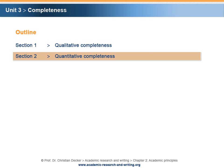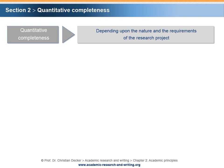Section 2: Quantitative completeness. Quantitative completeness depends upon the nature and the requirements of the research project. In academic research projects, there are a number of elements to be considered in terms of quantitative completeness. The following elements might be named differently in different research situations. Still, there always have to be elements in research projects that deal with the following aspects.